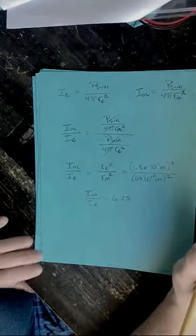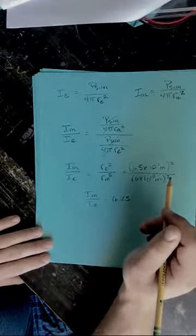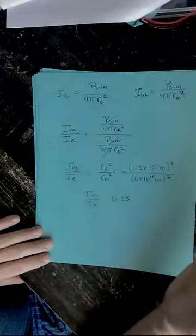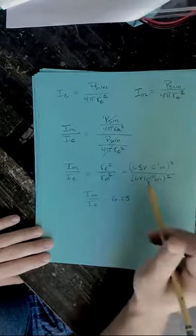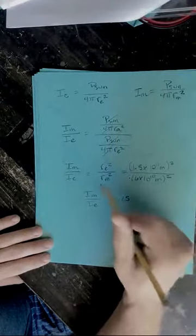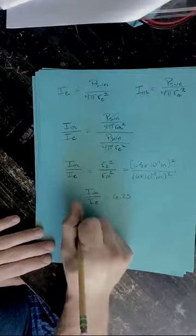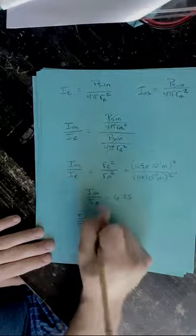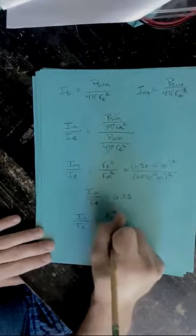In this final calculation, we did not need to know the power of the sun. We can compare two intensities without knowing the power of the source, because it's purely about the geometry of how that power is spread out — in this case, two spheres of radii R_Mercury and R_Earth. This gives us a general relationship: I₁ / I₂ = r₂² / r₁², which we can use to compare intensities without knowing the source power.